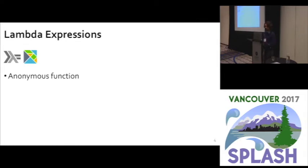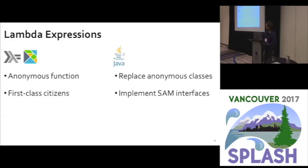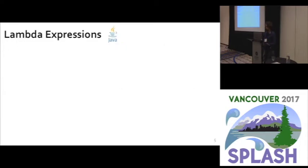We've waited so long to have lambda expressions in Java. In purely functional programming languages, lambda expressions are anonymous functions that are first-class citizens — you can pass them to functions and return them from functions. But in Java, lambda expressions replace anonymous classes that implement single abstract method interfaces. Under the hood they're different, but they give you the same functionality, more or less.